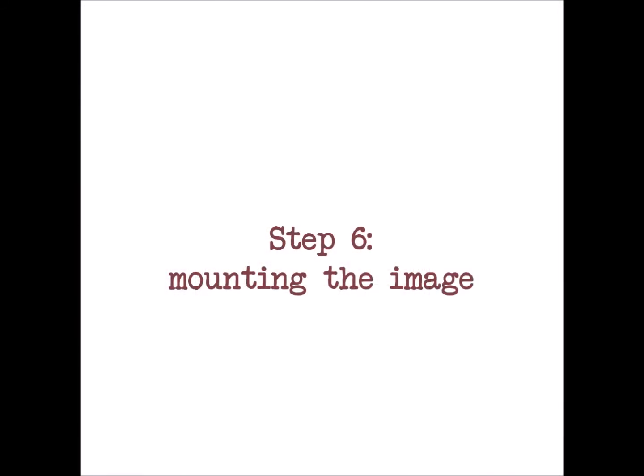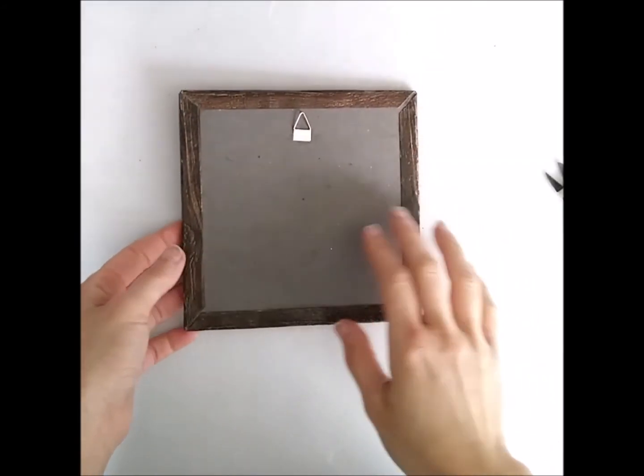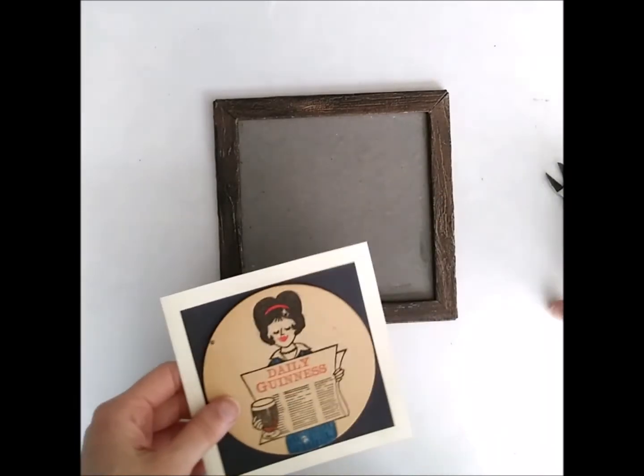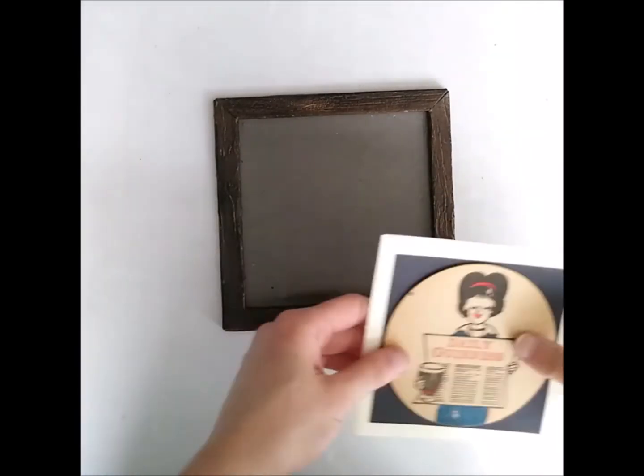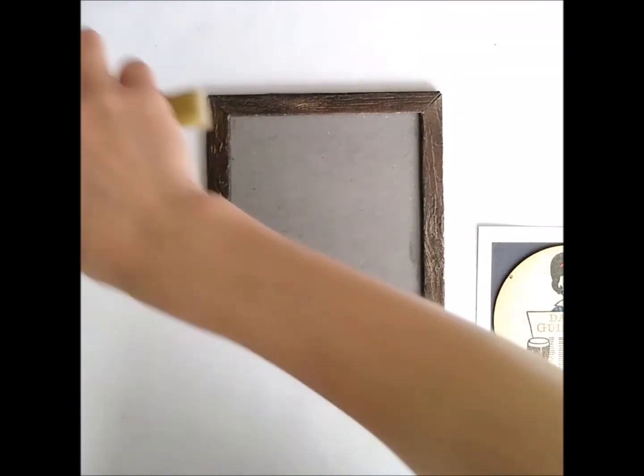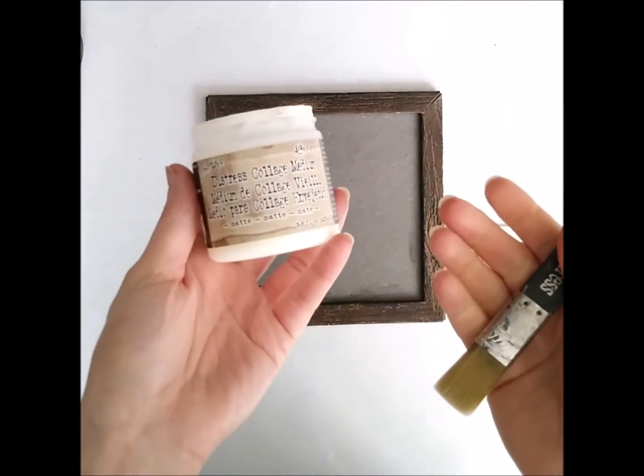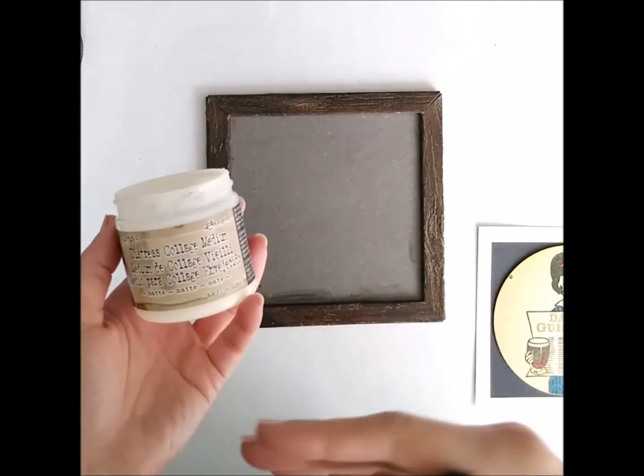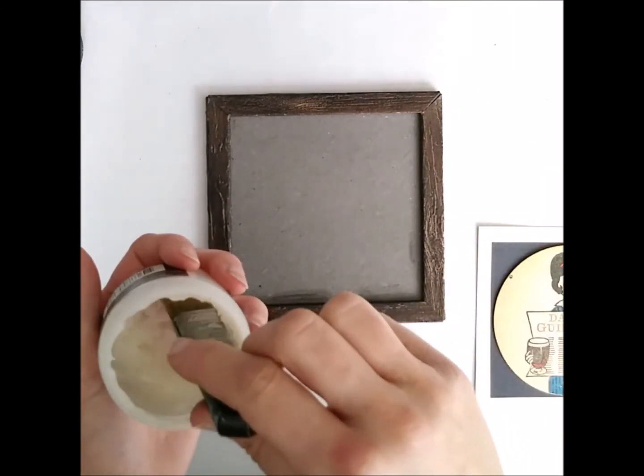And once it's dry to the touch we can mount our image. That coaster that was waiting patiently at the side, here it is. So for the mounting I will also use Collage Medium because aside from being very strong it also dries very quickly so it doesn't cause any warping of the paper.